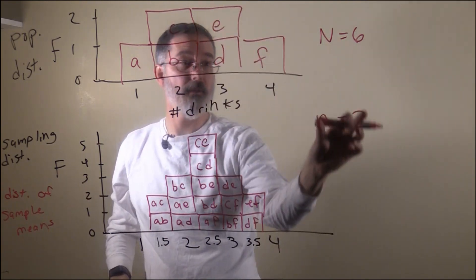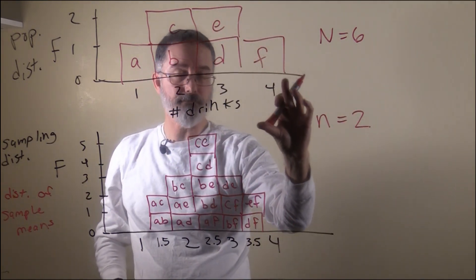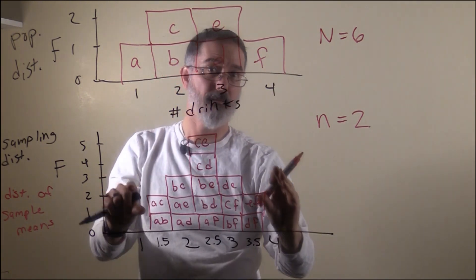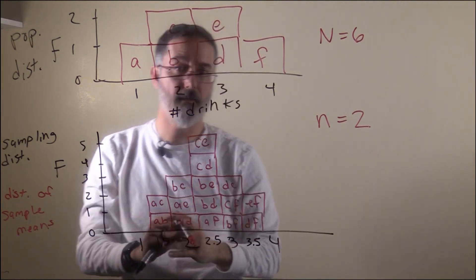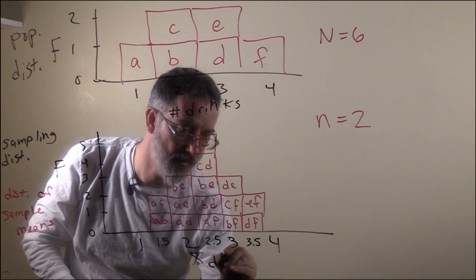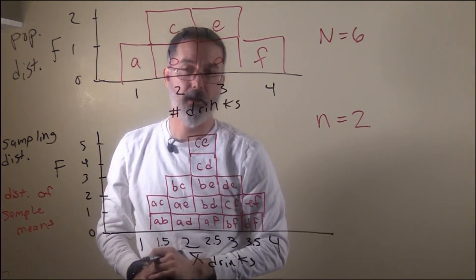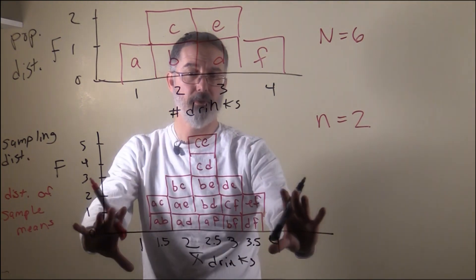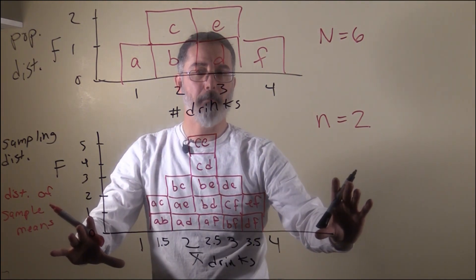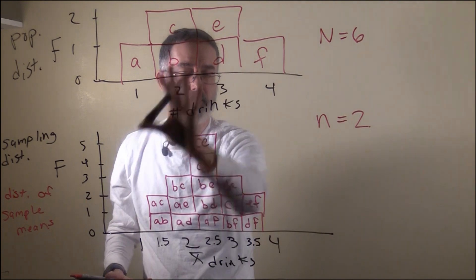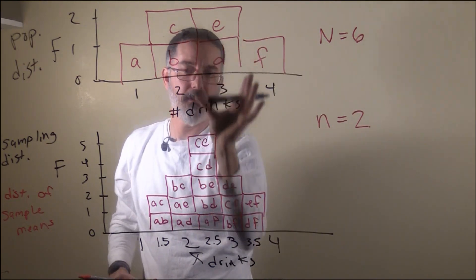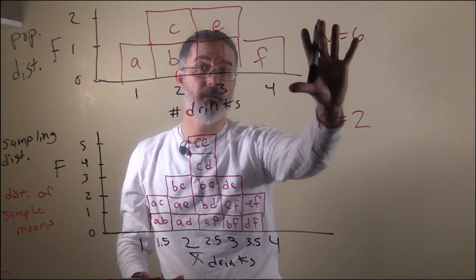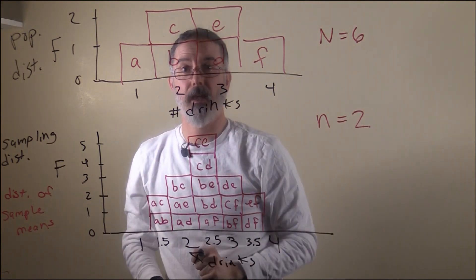We have exhausted all possible combinations of 2 from this distribution. For each combination of two, we calculated the average, and this is the plot of those sample means for the mean number of drinks those samples had. This is a simplified version of how sampling distributions are created for sample means. In practice, we will not actually have to calculate these — this just illustrates how you go from a population to a sample. When we have a normal distribution of the population, the math is pretty simple, and we will talk about that in a little bit.